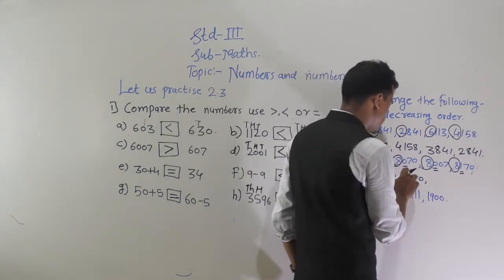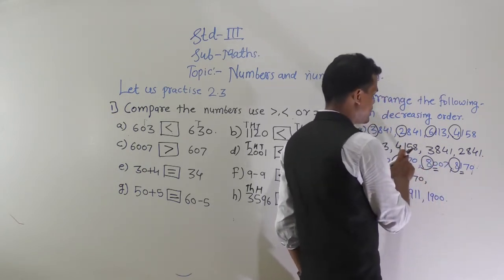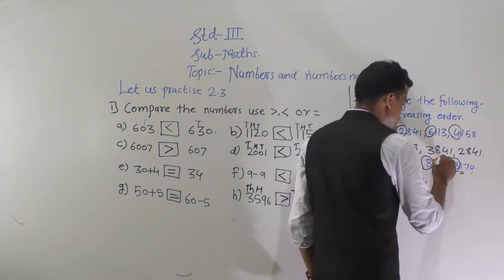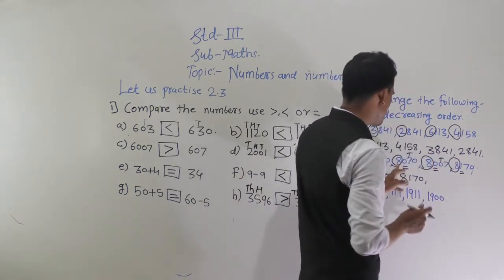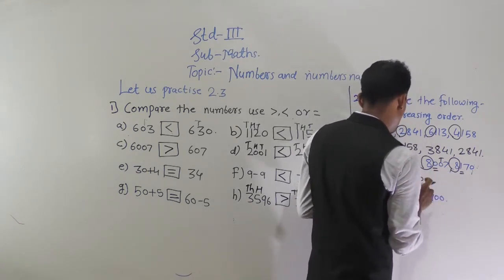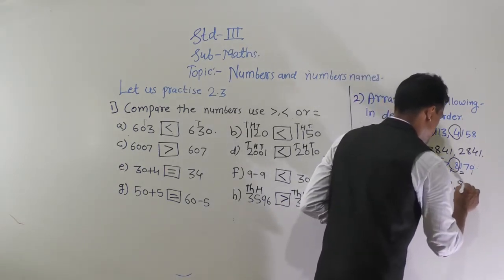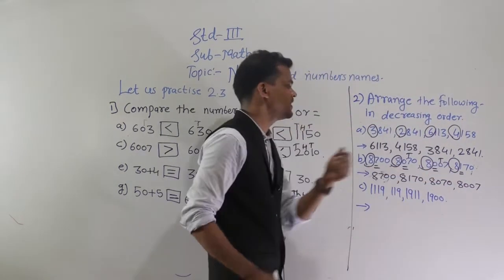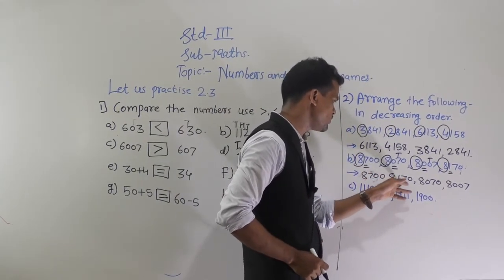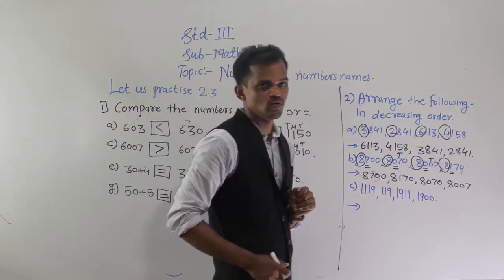Smaller than 8170, compare 8070 and 8007 — the hundreds place digit is the same in both. So compare the tens place digit: 7 is greater than 0. So after 8170, comes 8070, and at last 8007. The decreasing order is: 8700, 8170, 8070, and 8007.